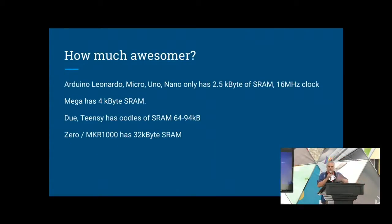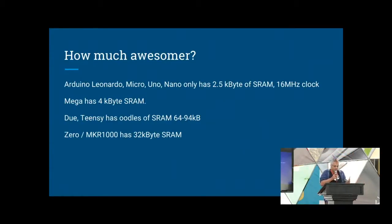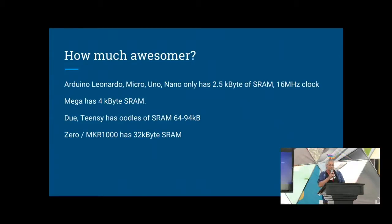Just to put things in perspective: good Arduinos have 2.5 kilobytes of RAM and a 16 MHz clock — that's almost 10x on every metric for the ESP32. Even the bigger boards like the Duo and the Teensy are still really far back, and sometimes they cost more.